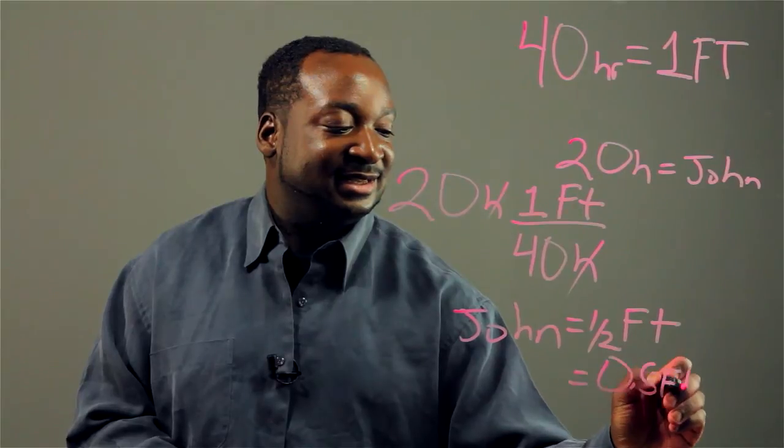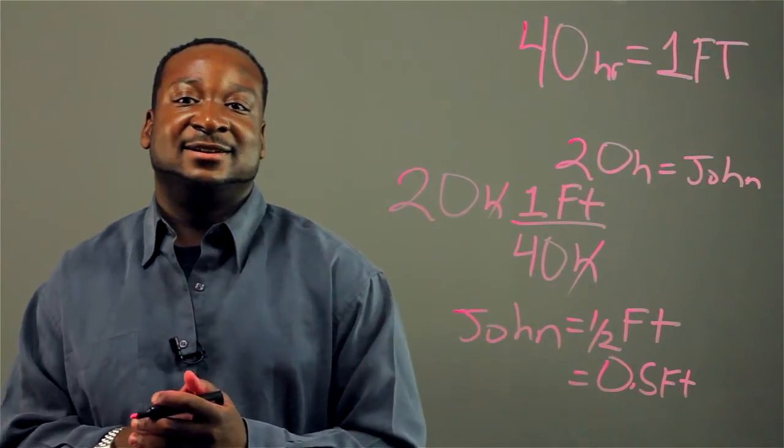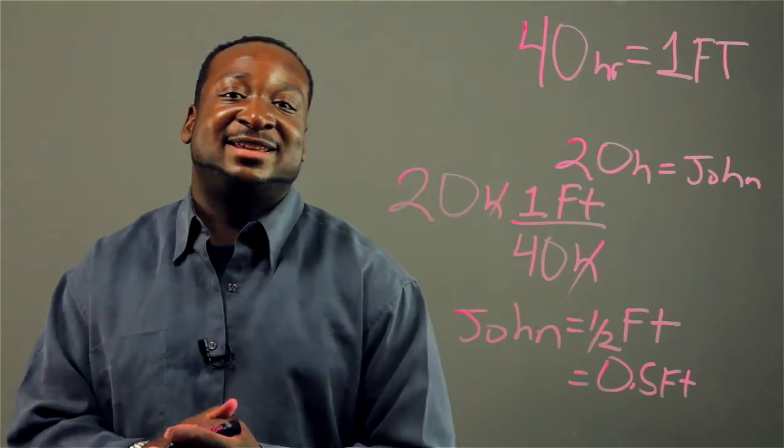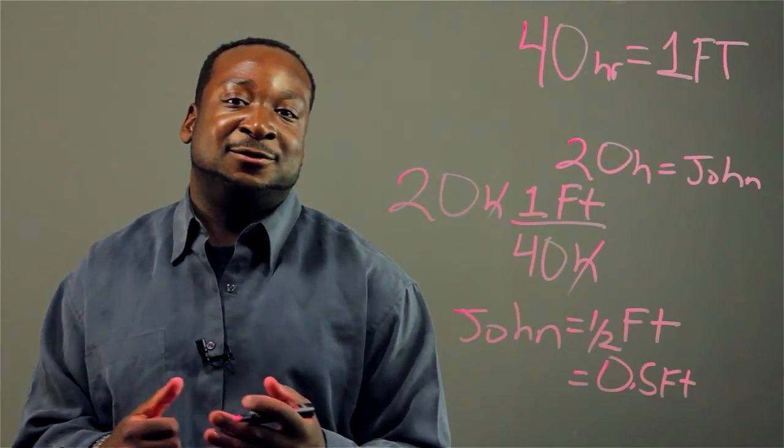So John is 0.5 full-time. And that's one simple method of calculating a full-time equivalent.